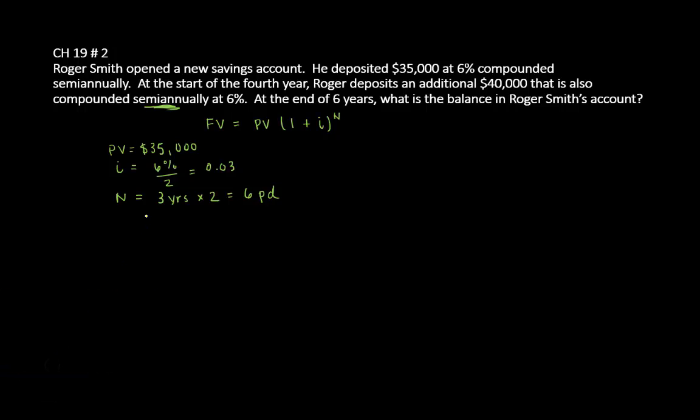So let's plug and chug here. FV equals 35,000 times (1 + 0.03)^6, and that comes out to be $41,791.83.